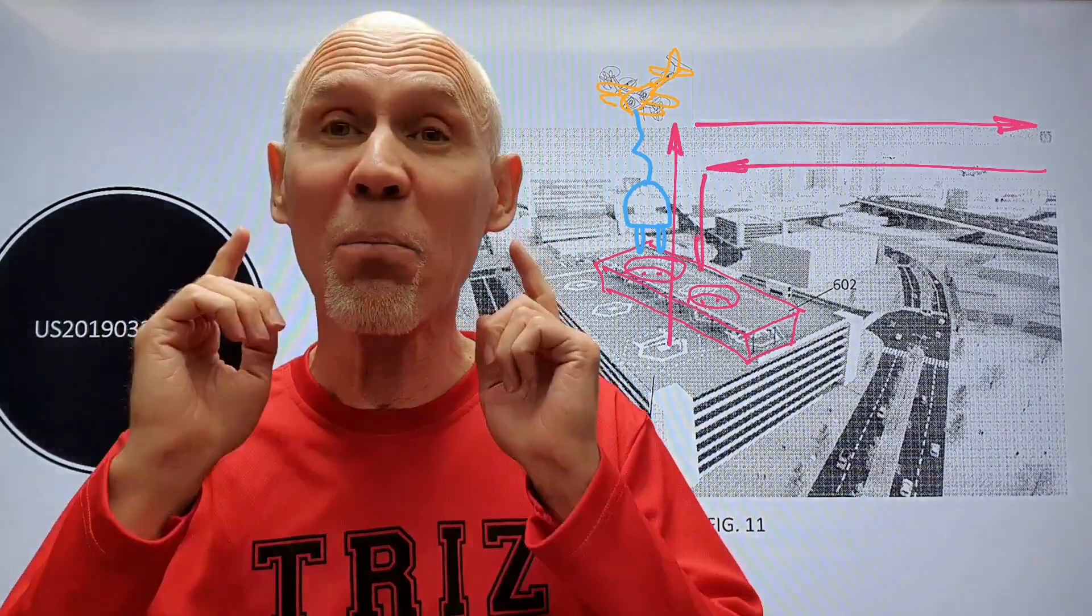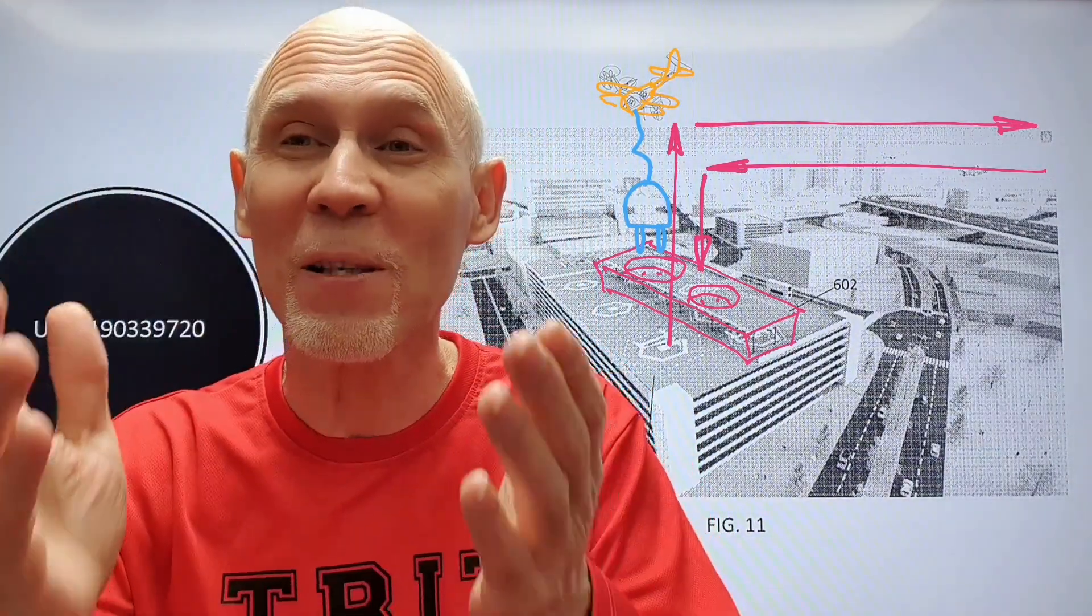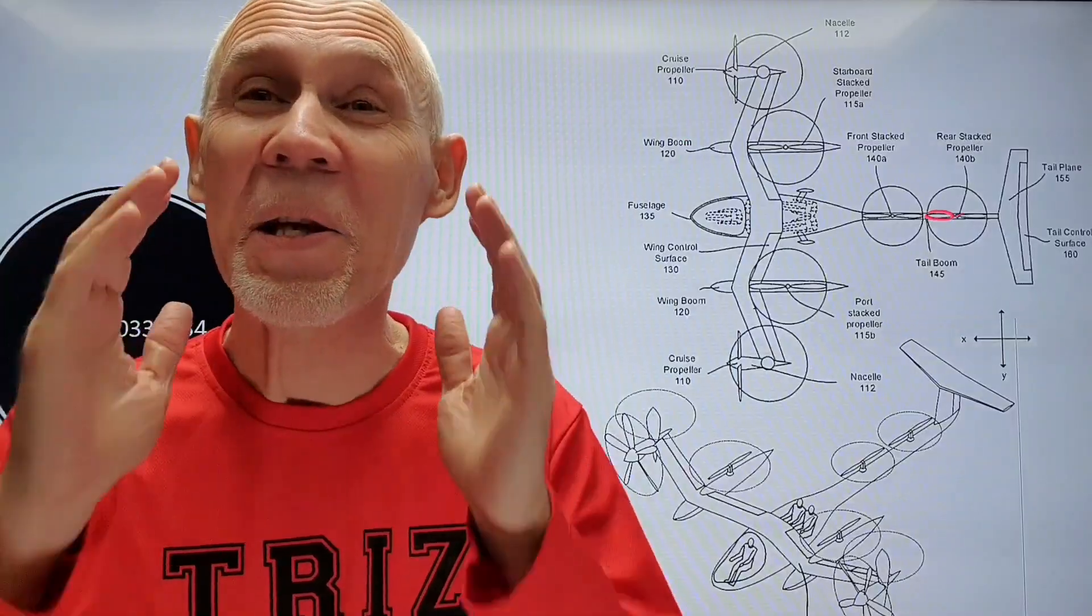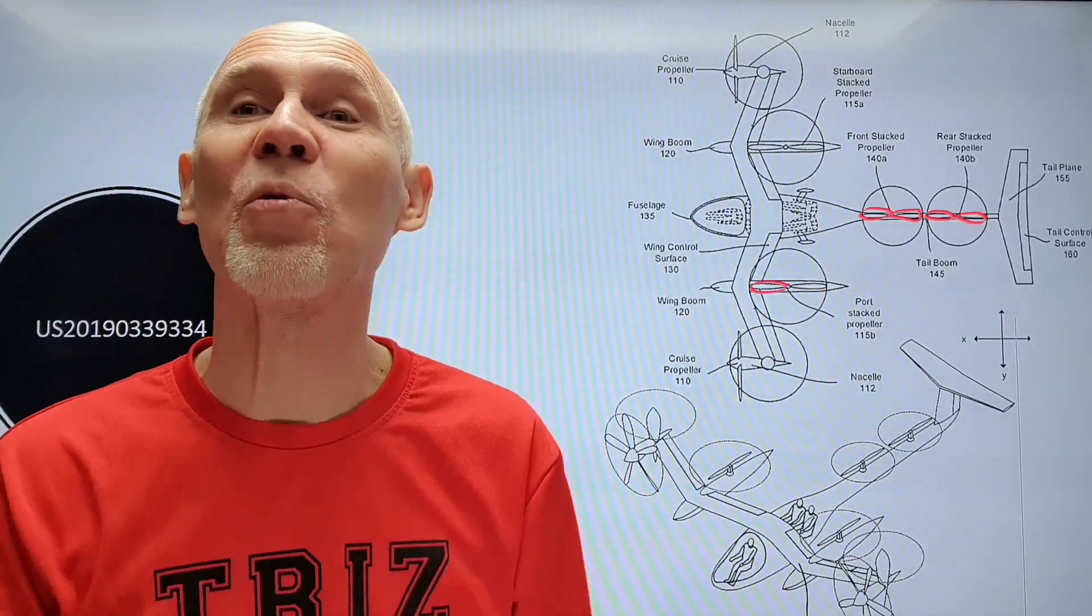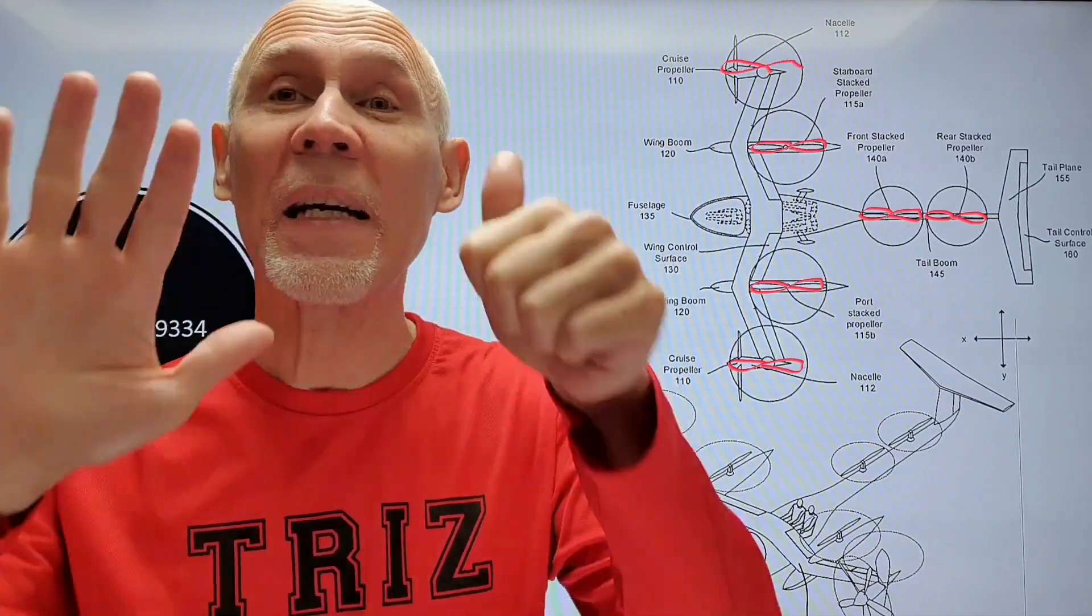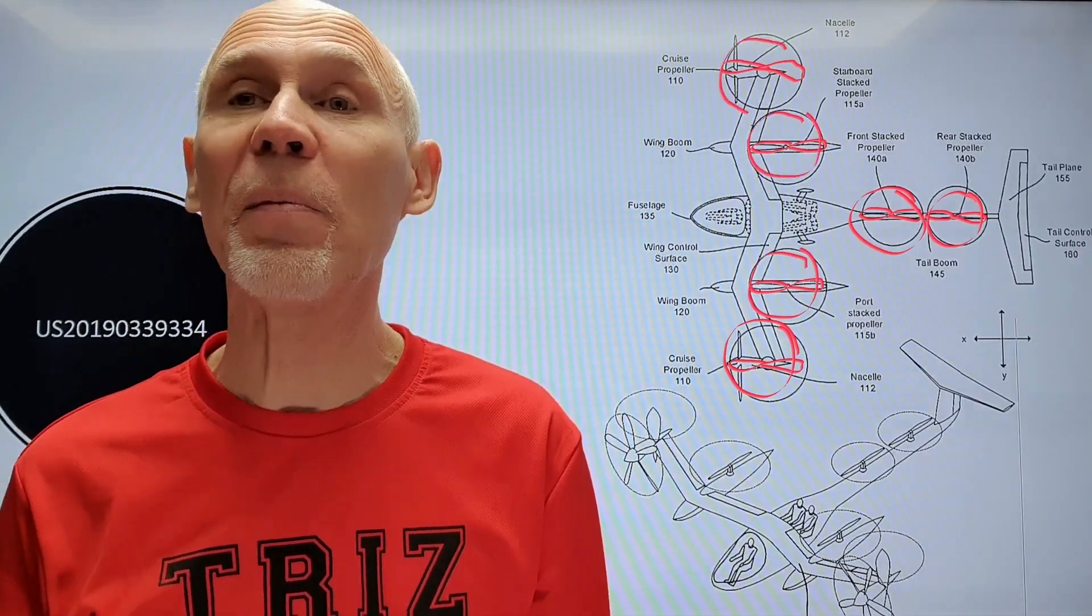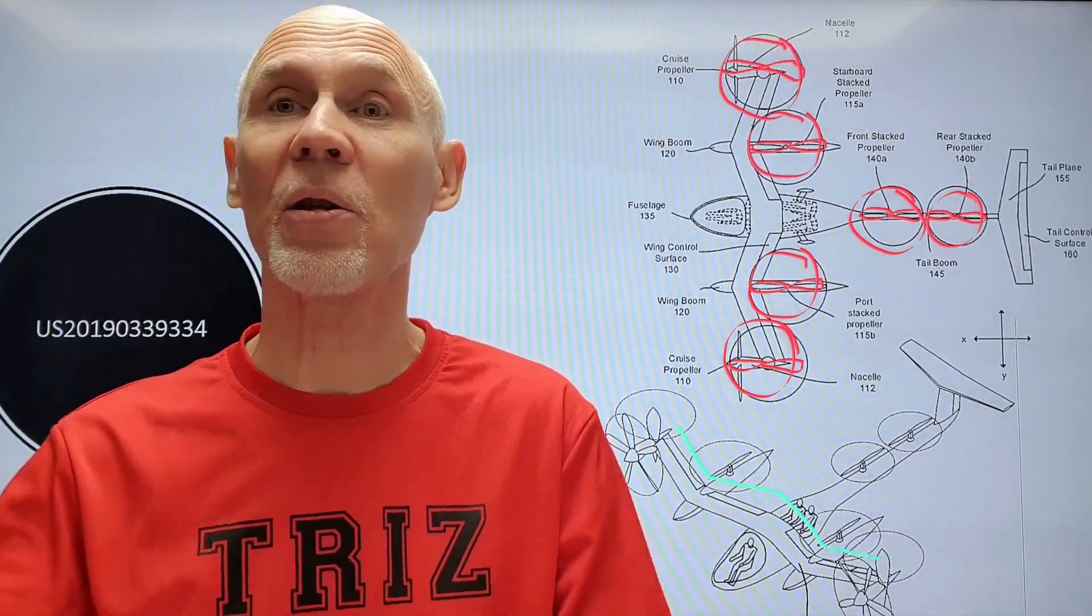And by the way, here you can stop this video, think how you would solve this problem, invent it by yourself, and then continue watching the video to find out what was proposed by inventors. And inventors proposed a concept of hybrid aircraft for vertical takeoff. It will use six - yes six - electrical motors equipped with double propellers positioned horizontally like helicopter blades.